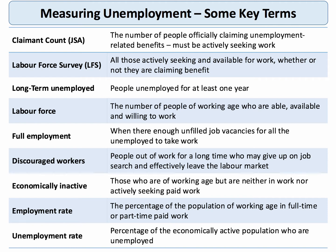We'll look at vacancies in a few minutes. Many people of working age in the UK have basically given up the search for work, and we call those people discouraged workers. They're a relatively small number, but it's very hard to capture just how big that group is. What we do know is there are about 8.5 million people in the UK who are of working age but not in work or actively seeking work. We call those people the economically inactive.